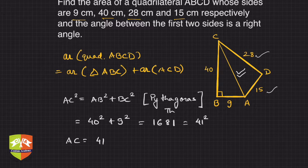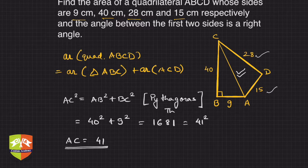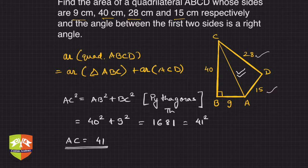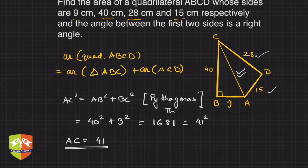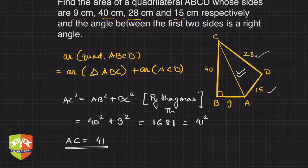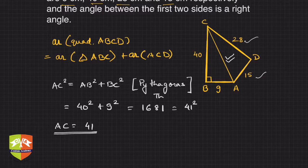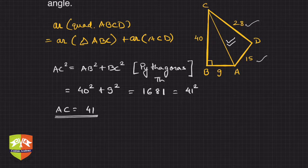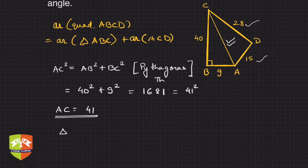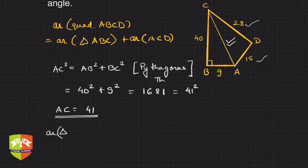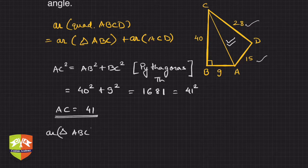If you see, 1681 happens to be 41 squared, so thank God we got AC as an integer: 41. If it was an irrational number, it would have given nightmares, but thankfully we have an integer. So let's utilize this value.